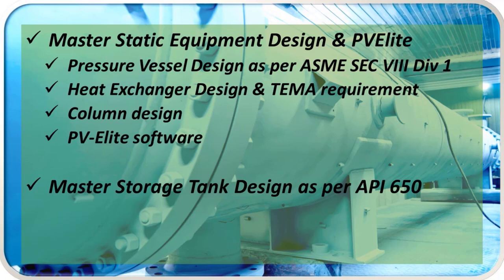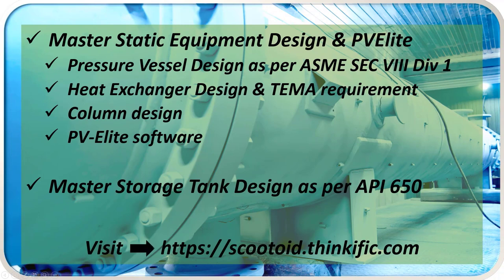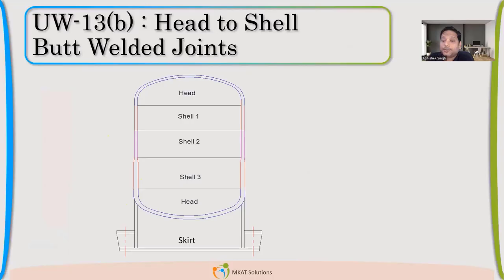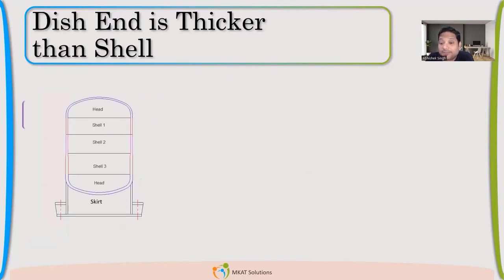So let us start Head-to-Shell. It's very simple. Most of you already know. If we have uniform thickness, we are not worried. Directly, we can make butt-welded joints. Joint details will be given by welding. If you are using type number one joint, then you know what type of weld design you have to give.